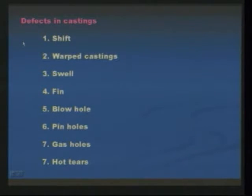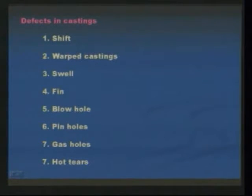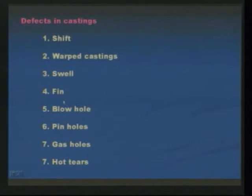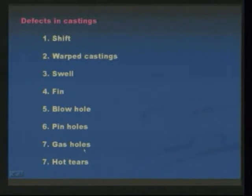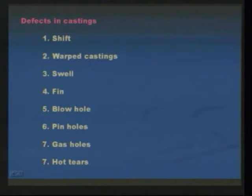During manufacturing of castings, some defects will be observed. The first one is shift — it mainly appears when the cope and drag are distorted. The second one is warped castings. The third one is swell — swell is mainly caused by not doing perfect ramming. Fins and blow holes are also developed due to discontinuity of metal flow. Gas holes and hot tears are caused by gas entrapped in the molten metal itself. These are some of the defects observed in the production of castings.